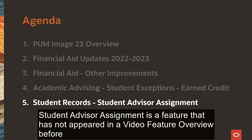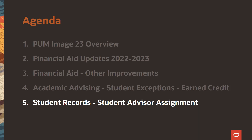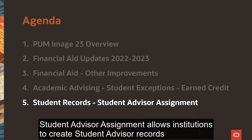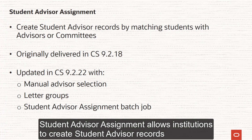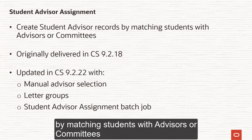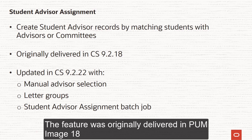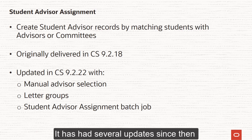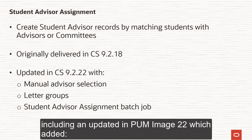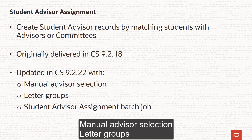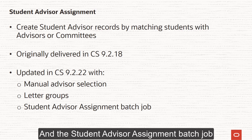Student Advisor Assignment is a feature that has not appeared in the Video Feature Overview before. It allows institutions to create student advisor records by matching students with advisors or committees. The feature was originally delivered in PUM Image 18 and has had several updates since then, including an update in PUM Image 22 which added Manual Advisor Selection, Letter Groups, and the Student Advisor Assignment Batch Job.